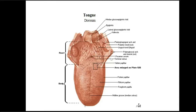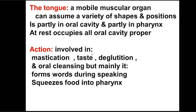The posterior one-third of the tongue is attached to the anterior surface of the epiglottis and to the soft palate by the palatoglossus muscle. It is attached to the epiglottis by three folds of mucous membrane called glossoepiglottic folds — one median and two lateral. Between these folds lie two depressions called valleculae. Through the palatoglossal arch the tongue is attached to the soft palate, and it is also attached to the superior surface of the mylohyoid, and to the mandible and hyoid bone.